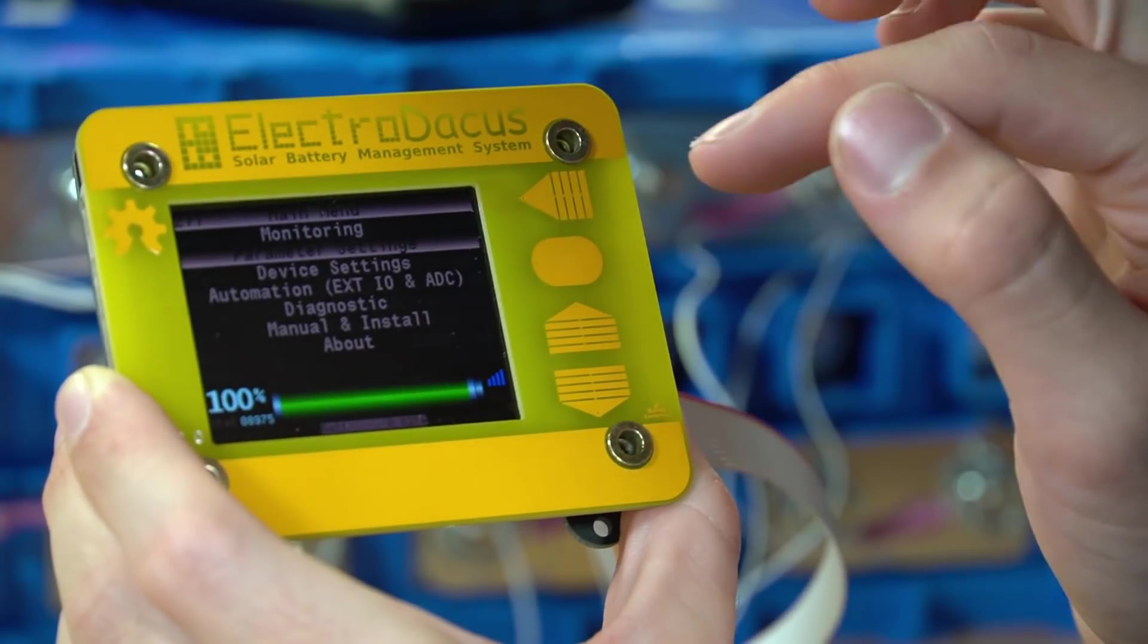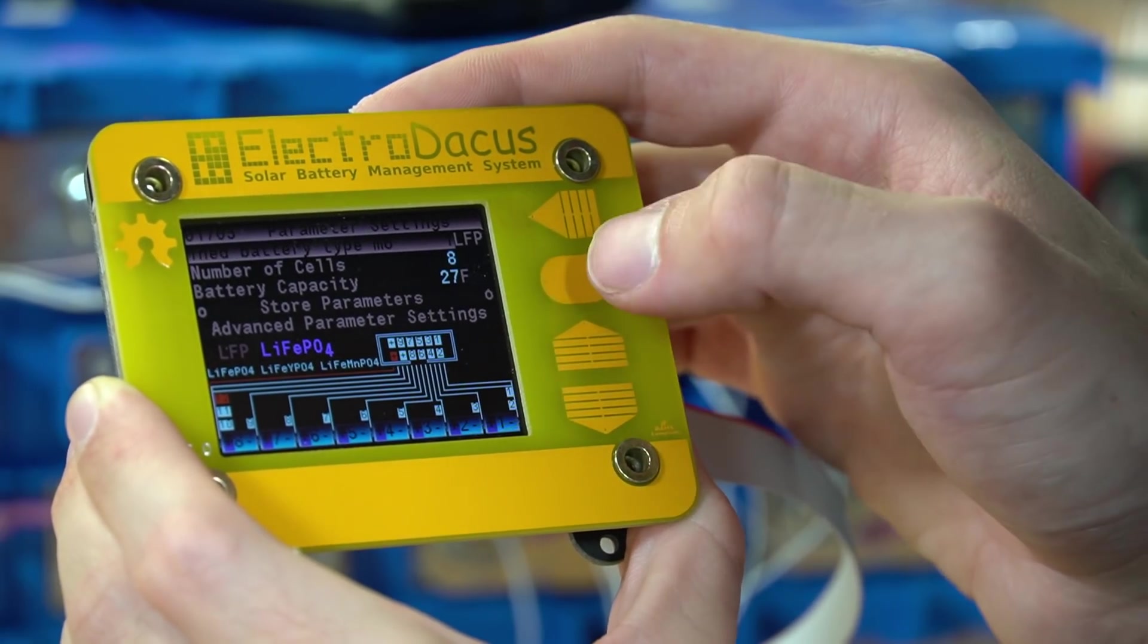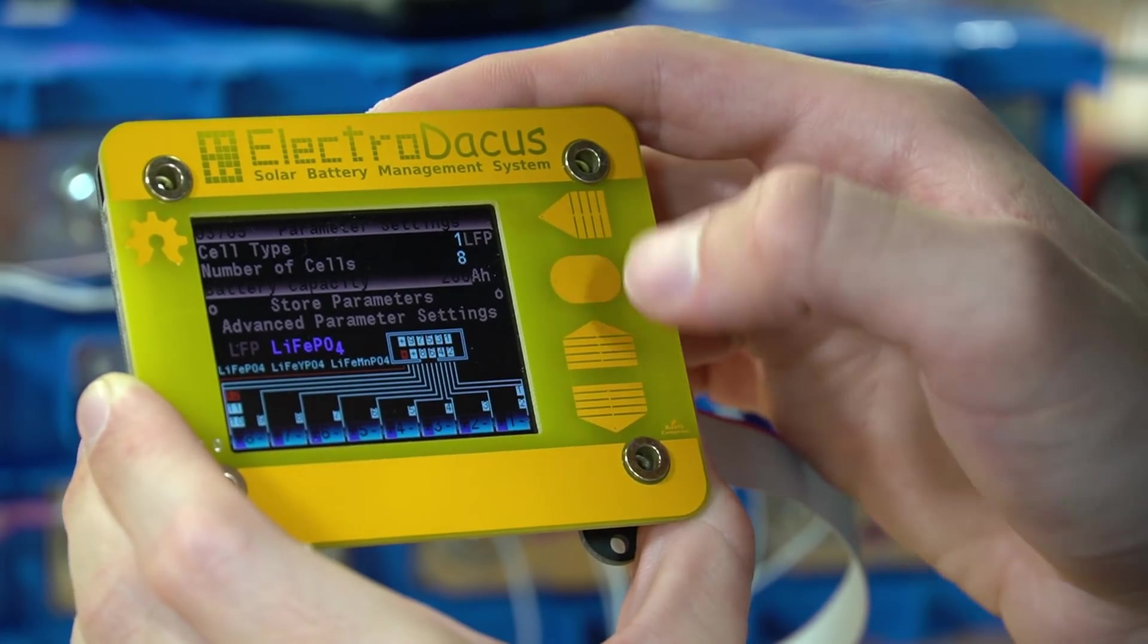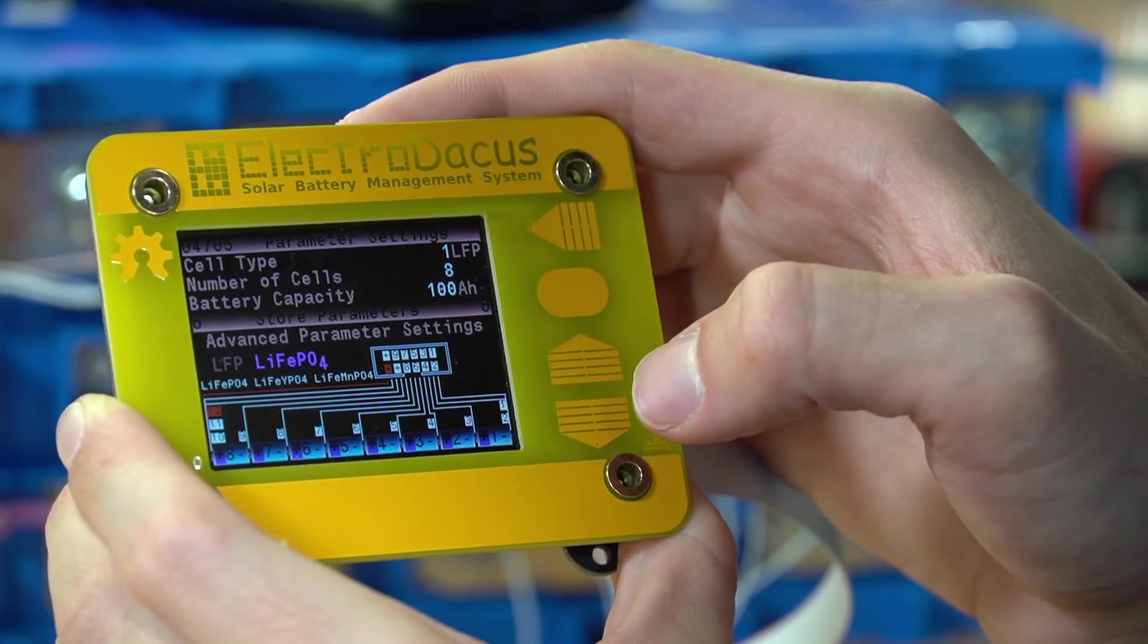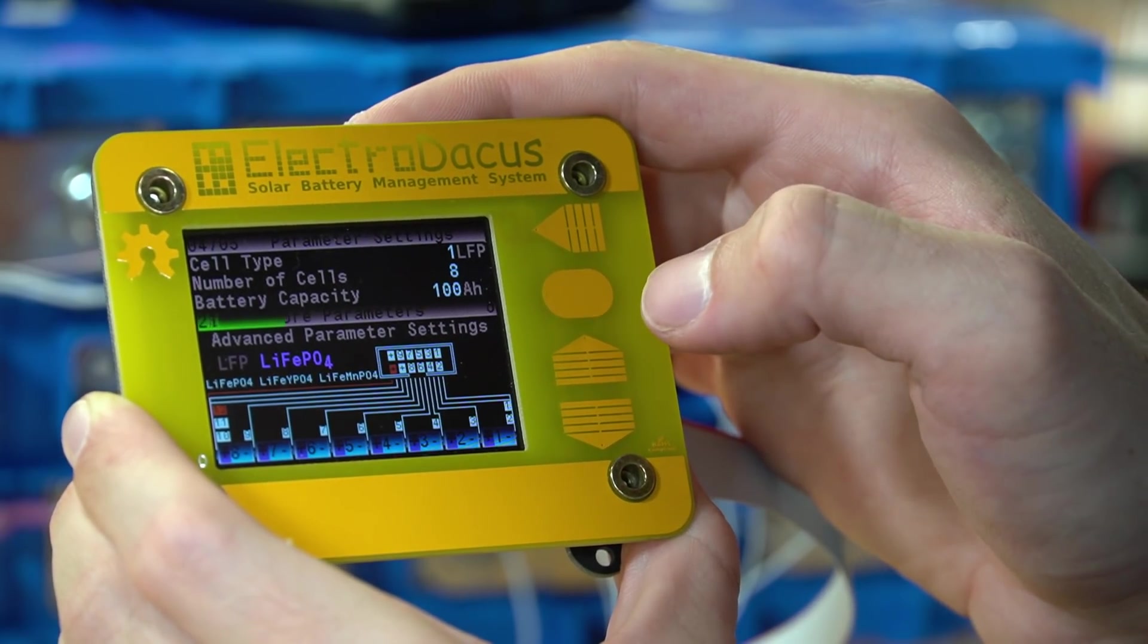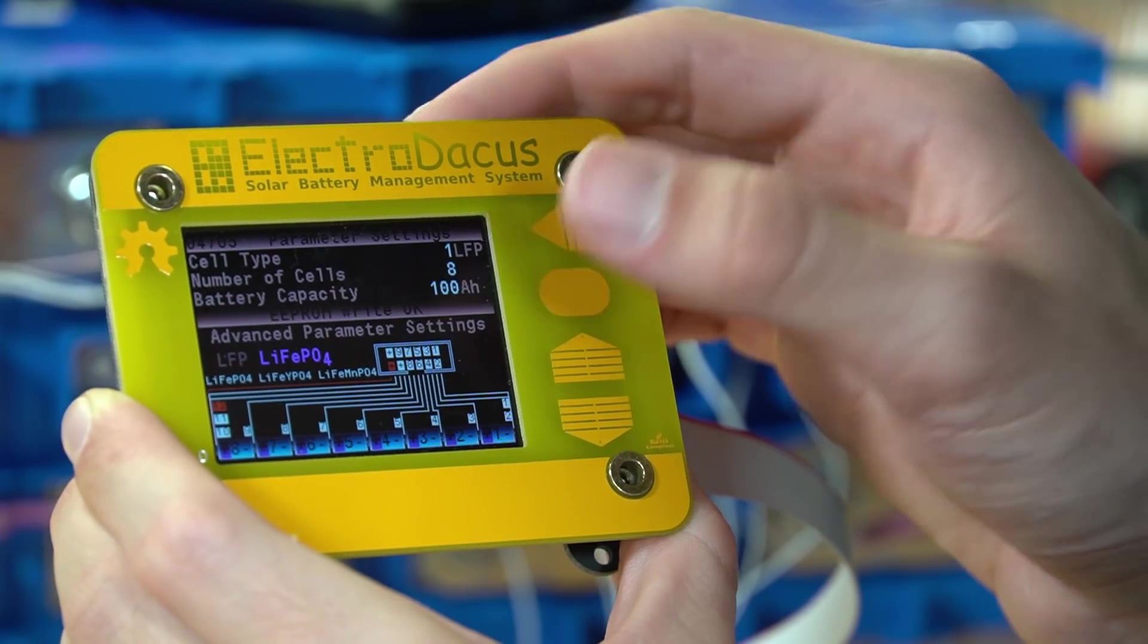Okay, let's go to parameter settings. They have lithium titanate, LCO, lithium iron phosphate. So let's set that. The battery capacity is 100. And then set that. And store parameters. You just click it. Cool. It did it.